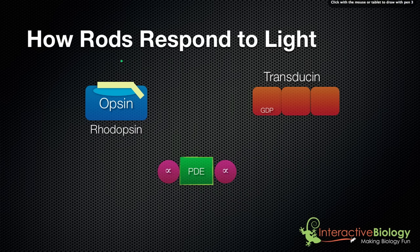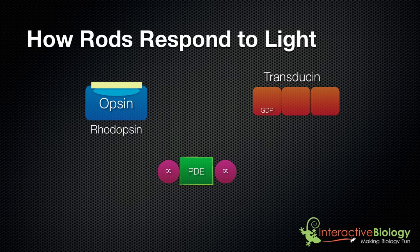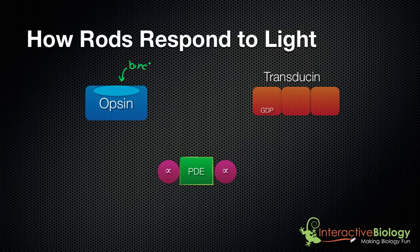This process all starts with light. A photon of light comes in and strikes rhodopsin. When the photon of light strikes rhodopsin, the cis-retinol changes into a different form called trans-retinol. It's no longer in the cis form. When that happens, it causes retinol to lose its attraction for the opsin molecule, and once that connection breaks, the retinol leaves.